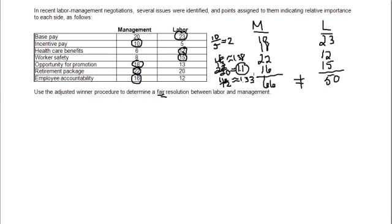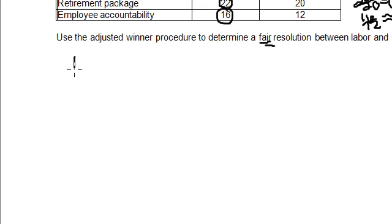So what that means is that we're going to transfer part of that package over to labor. And the reason I say part of the package is if I take all 22 points and move them to the labor side, now labor will have more points, 72, than management has. And again, that would not be fair. So what we're going to do is transfer a part of it. Let's call it P for part. Okay, so on the management side of things,